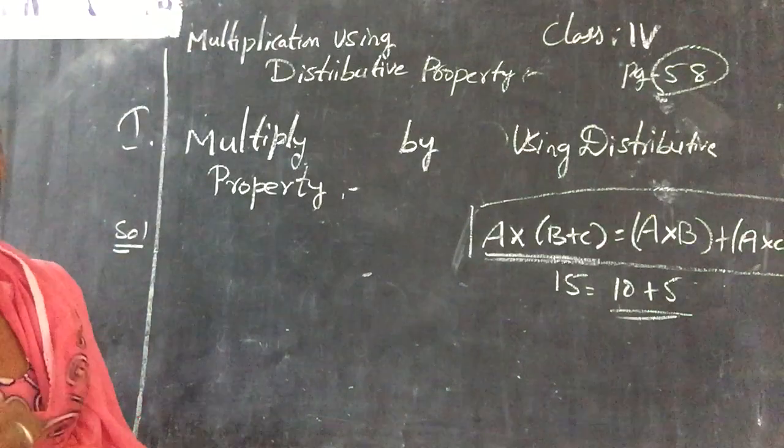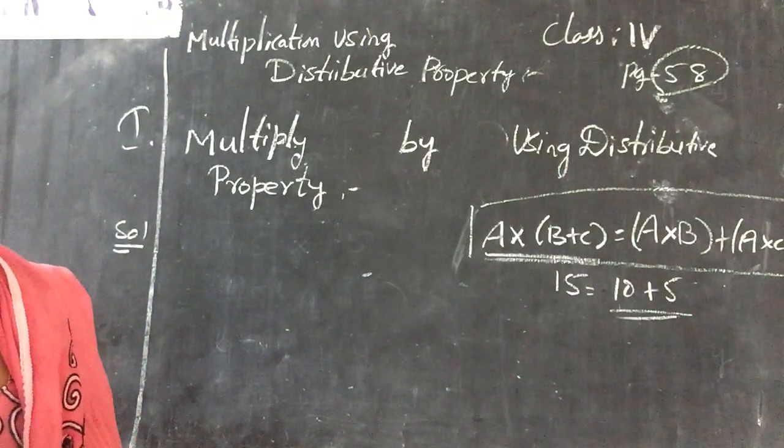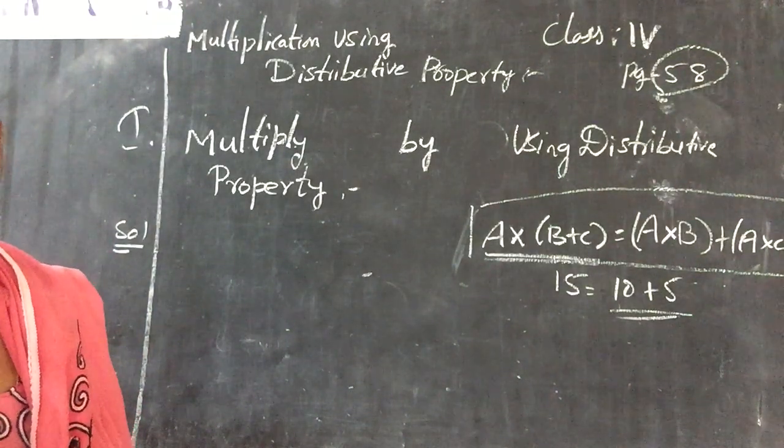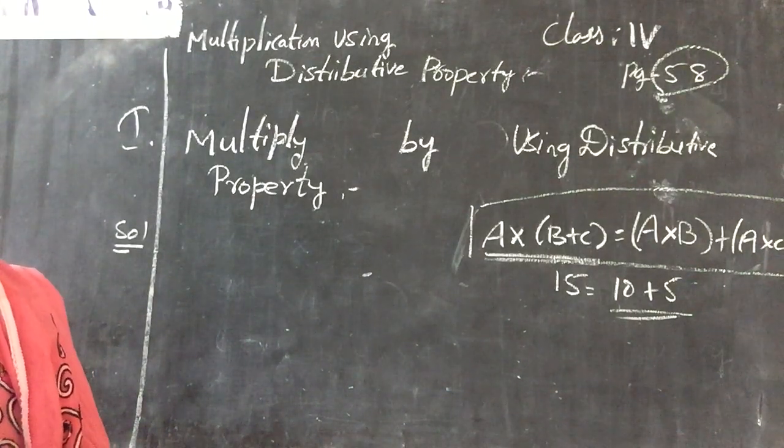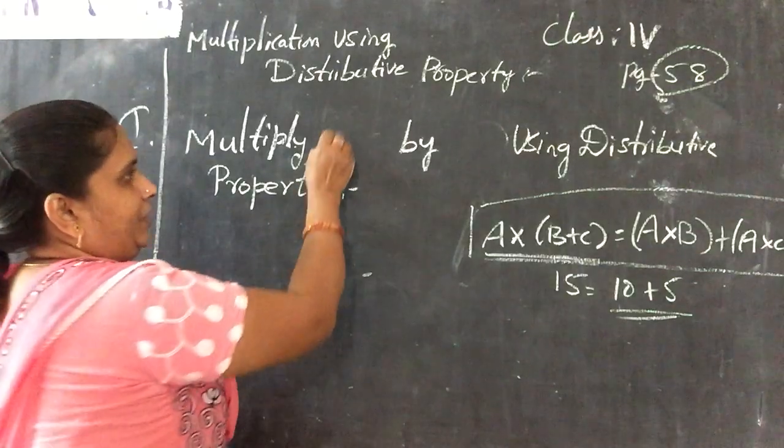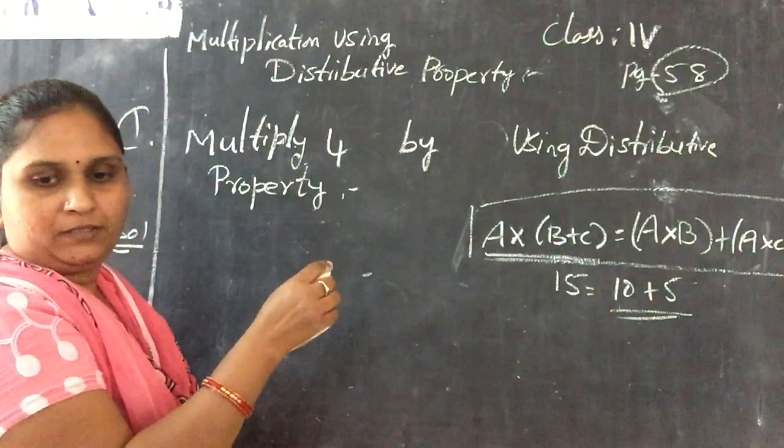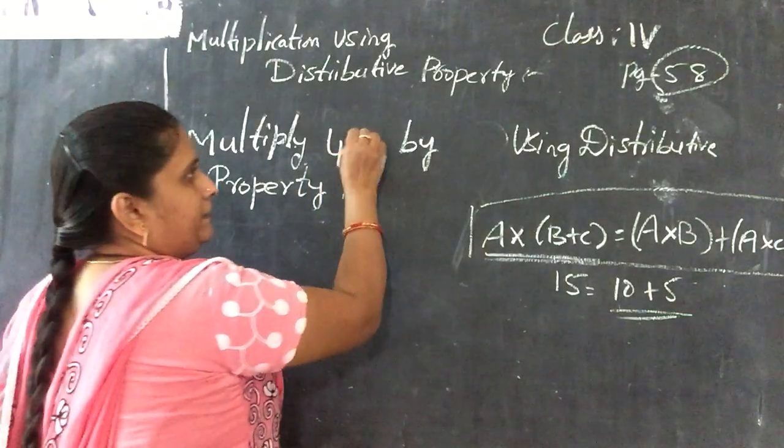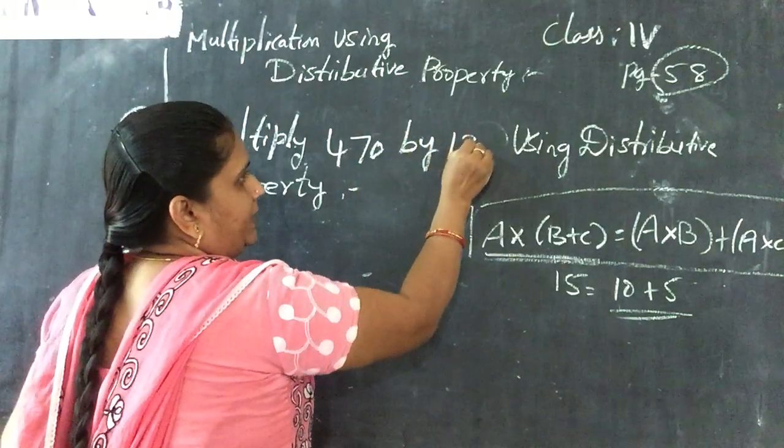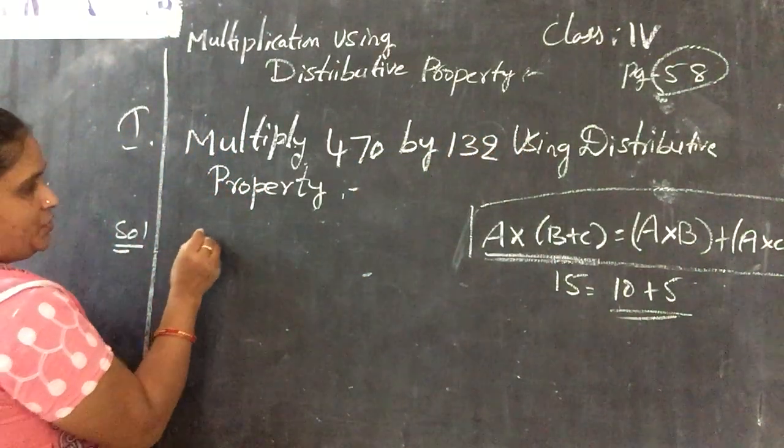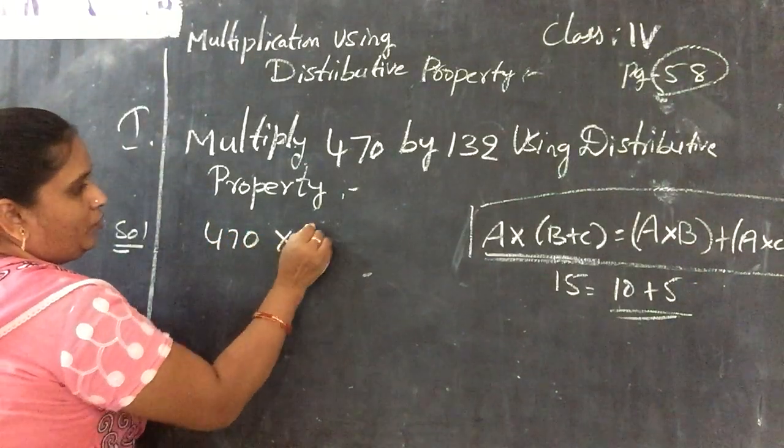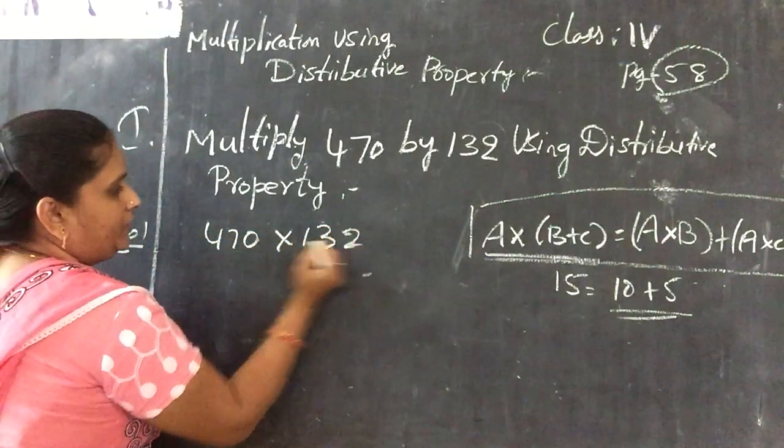Or you can write multiply 470 into 132. 470 into 132, same, first you write it, 470 into 132.